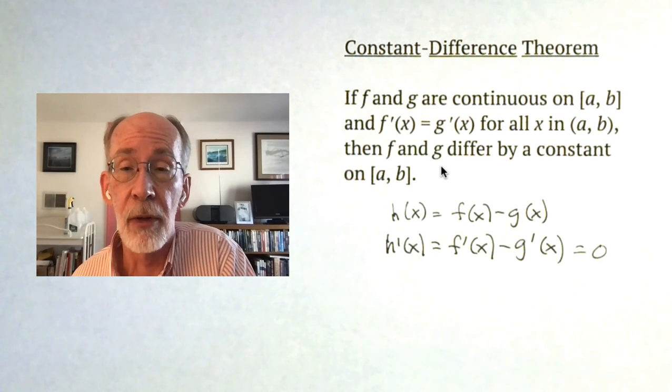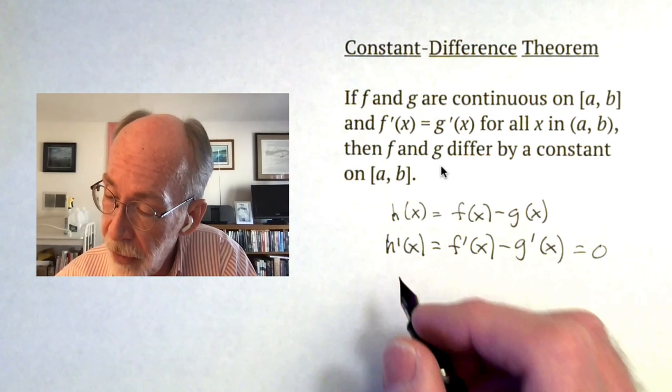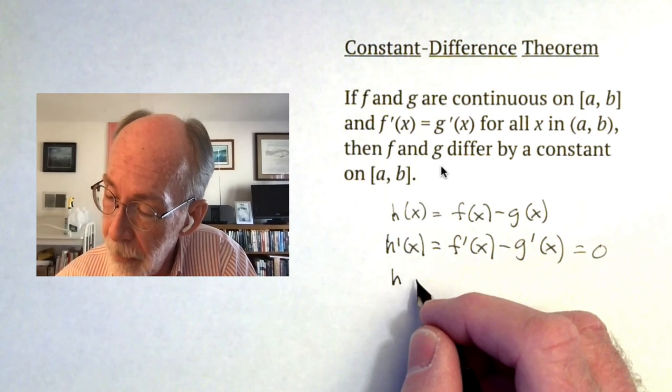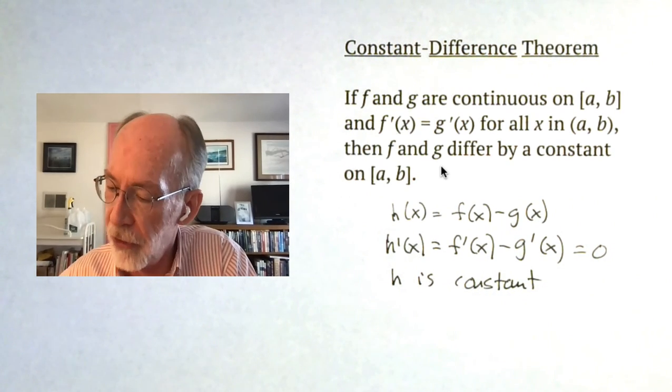But if h prime is zero, according to the result we referenced right at the beginning of the video, then h has got to be constant. But h was nothing but f minus g.